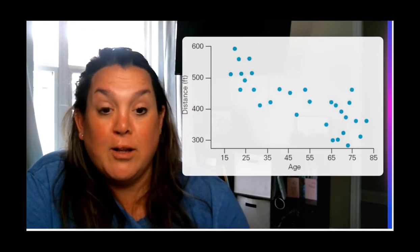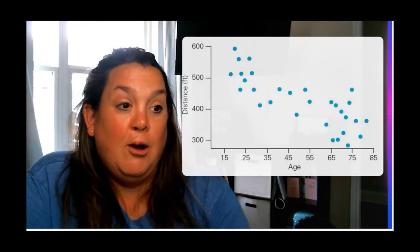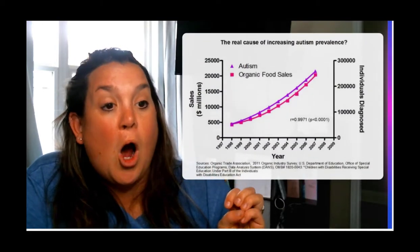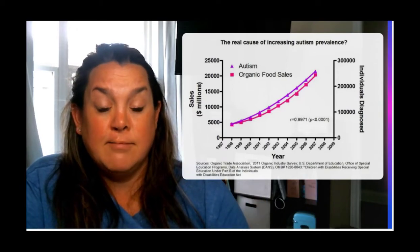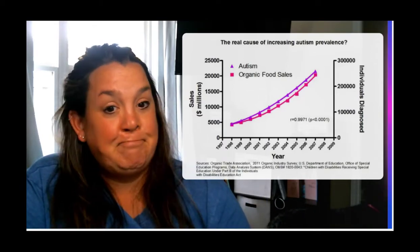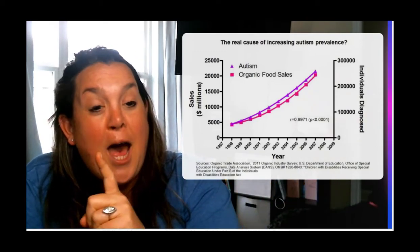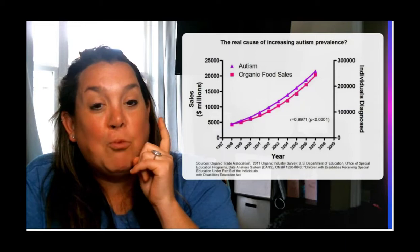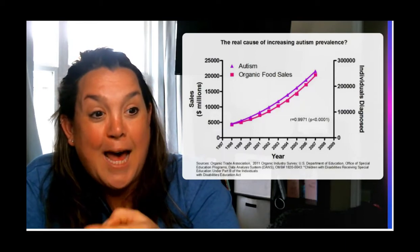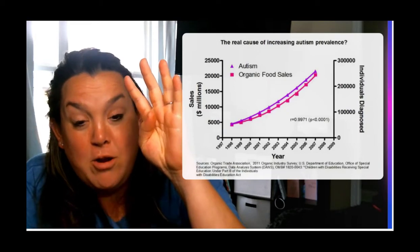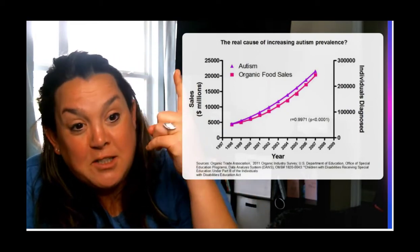Now, something like the real cause of autism is organic food sales? No. Yes, these two things are correlated, and I was actually reluctant to show this graph because it actually has four variables on it. Can you believe that? Four variables. So autism and organic food sales, that's what the color represents. Sales of organic foods is on one axis.